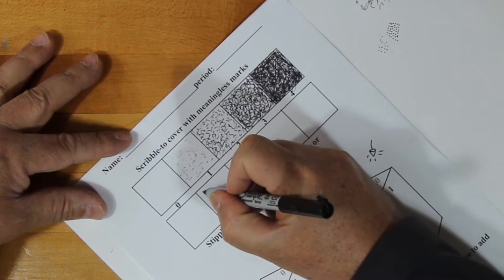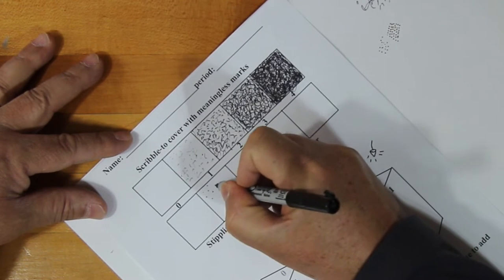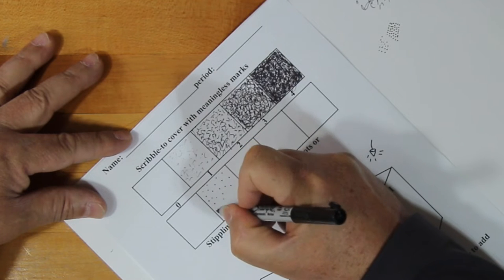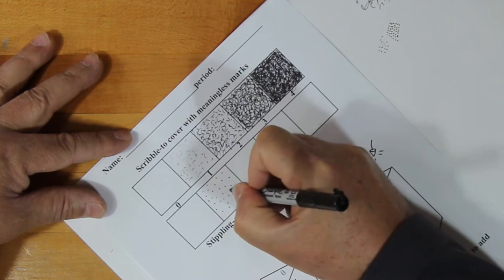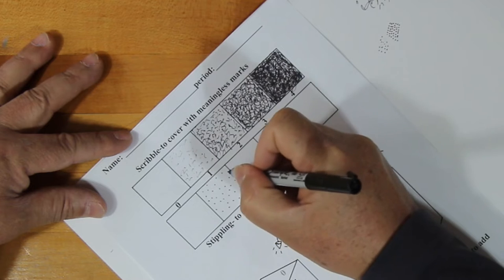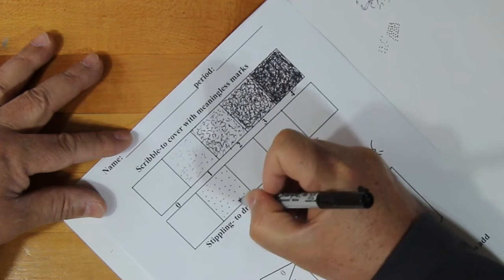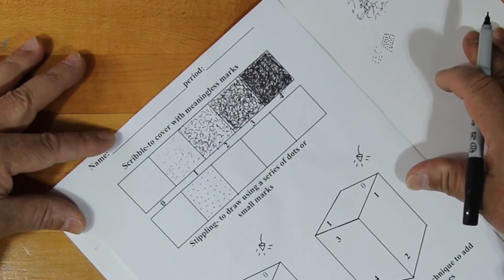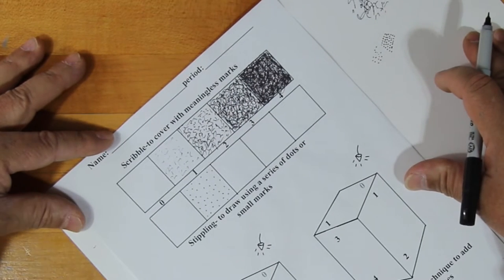For one, we're just going to randomly start putting dots far apart. To create like a light value, like a light grayish looking value. Remember, these things have to be looked at from a distance, just like our cross hatching. So that would be a light gray.